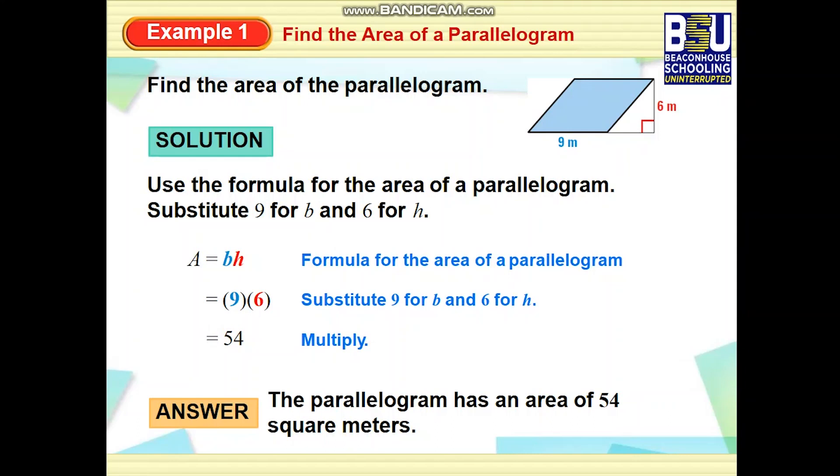Well class, now we will practice one example. Find the area of the given parallelogram. Can you tell me which side is the base? The base of this parallelogram is 9 meters and height is 6 meters. By applying the formula you can easily calculate area. Area equals base times height. By substituting the values you get 54 square meters. Excellent.